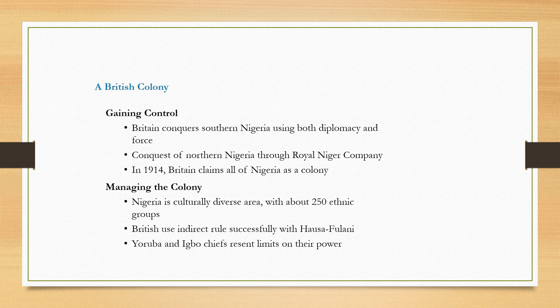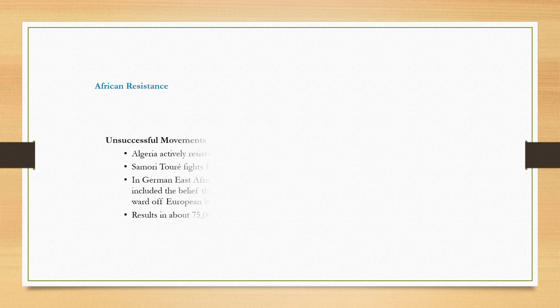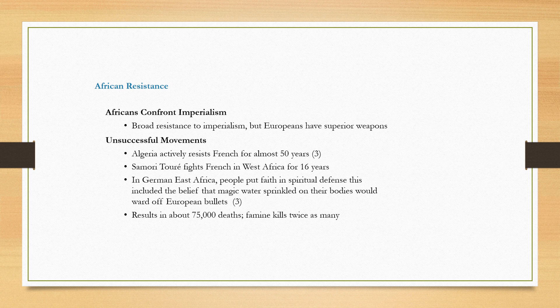Nigeria is a culturally diverse area with 250 different ethnic groups. The British first tactic was to use indirect control, ruling through local rulers, and indirect rule actually worked very successfully in Nigeria through the Hausa Fulani. But with 250 different ethnic groups in the nation, the Yoruba and the Igbo peoples who were living there resented British control.